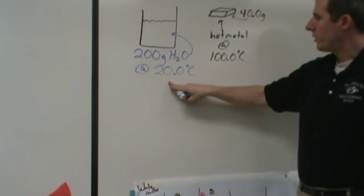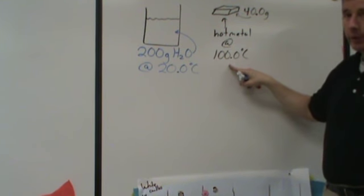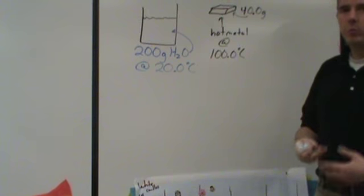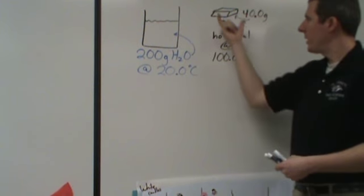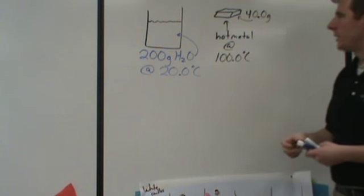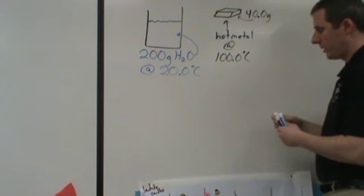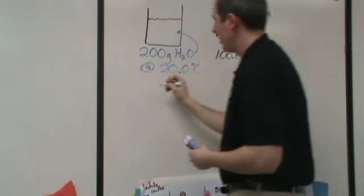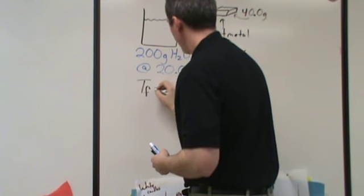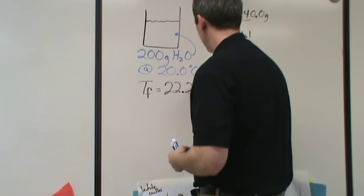So I have 200 grams of water at 20 degrees. I have 40 grams of metal at 100 degrees and I want to know what the specific heat of the metal is. Hypothetically, I take this chunk of metal and I dunk it in the water and I stir it and I measure the temperature and I do everything I need to to figure out what that change in temperature is. And the final temperature for both comes out to be 22.2 degrees Celsius.